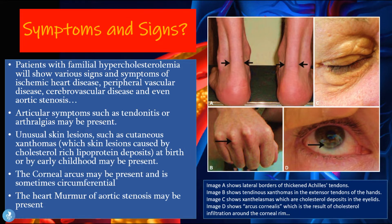The corneal arcus or arcus cornealis is the result of cholesterol infiltration around the corneal rim. The cholesterol deposits form a circular ring around the cornea itself — this is called the corneal arcus. The heart murmur of aortic stenosis may also be present.